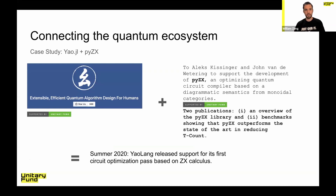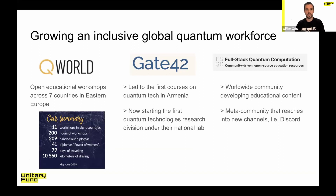We're also able to not just fund individual pieces of software, but help connect the pieces together. One project this year was a connection between YaoJL — a Julia environment, one of the top Julia environments for quantum programming — and another Unitary Fund project called PyZX, a ZX-calculus-based compiler. They were building a domain-specific language called YaoLang and were able to integrate ZX as one of the compiler optimization passes inside it. We also invest in people: we gave an extension grant to QWorld, who ran workshops across seven countries in Eastern Europe. Leah received one of our grants to help build out the Full Stack Quantum Computation community and website.